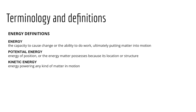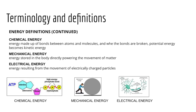Energy is defined as the capacity to cause change or the ability to do work, ultimately putting matter into motion. When talking about energy, we often look at two forms: kinetic energy and potential energy. Potential energy is the energy of position — the energy matter possesses because of its location or structure. In the human body, potential energy is stored in the form of chemical energy. In contrast, kinetic energy is the form of energy powering any type of matter in motion.